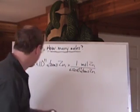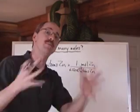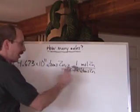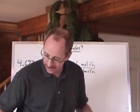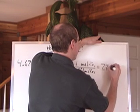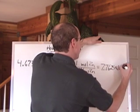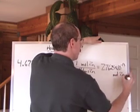But look, atoms of zinc cancel, and you're left with moles of zinc. So what you, in effect, end up doing is taking this number and dividing by 6.02 times 10 to the 23. What do you get? You get 7.7625 times 10 to the negative 13 moles of zinc.